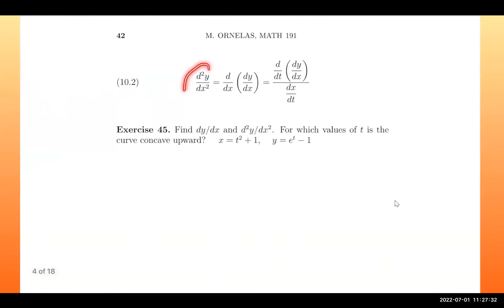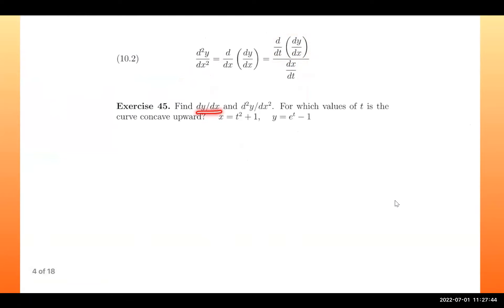Now they show us the formula for the second derivative: it's the derivative of the first derivative divided by dx/dt. For this example, they want us to find the first derivative, then the second derivative, and then determine for what values of t the curve is concave upward. Let's start with dx/dt.